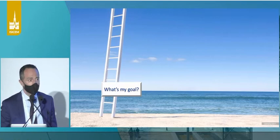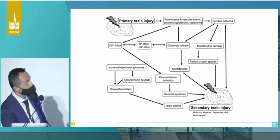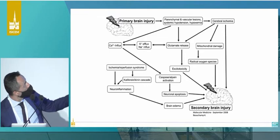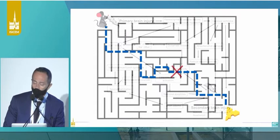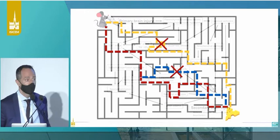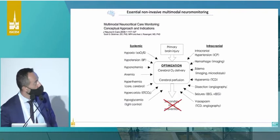First of all, as an intensivist, what is my main goal? My main goal is to avoid, or at least treat, what we know is the secondary brain injury. We can't do anything about the primary brain injury, but in order to move from primary to secondary brain injury, I'd like to look at it as a maze — going from point A to B, if we want to block the mouse from going to the cheese, we can't just block one path if there are many paths. We need to block all the paths for our therapy to be successful. And we know that even the two major causes of secondary brain damage are influenced by many other factors.